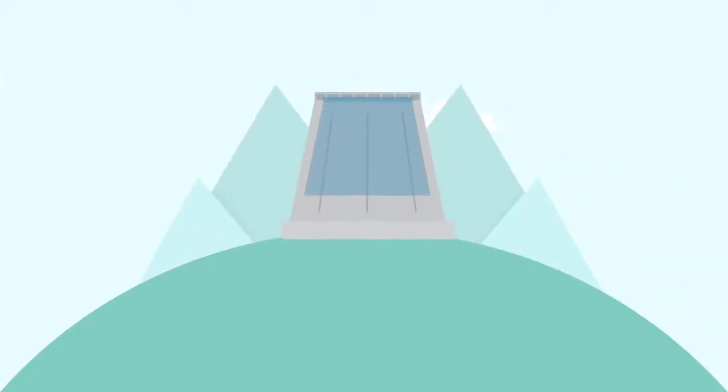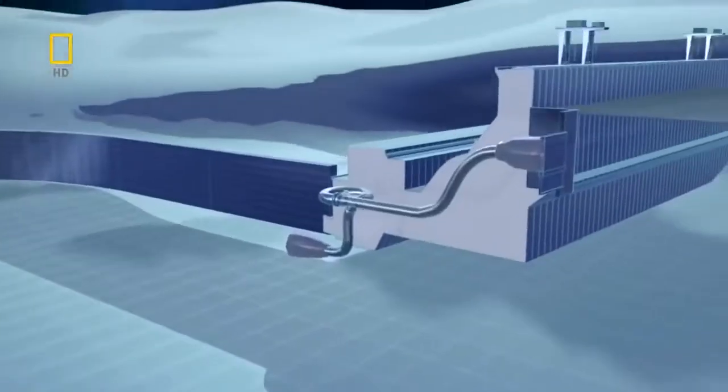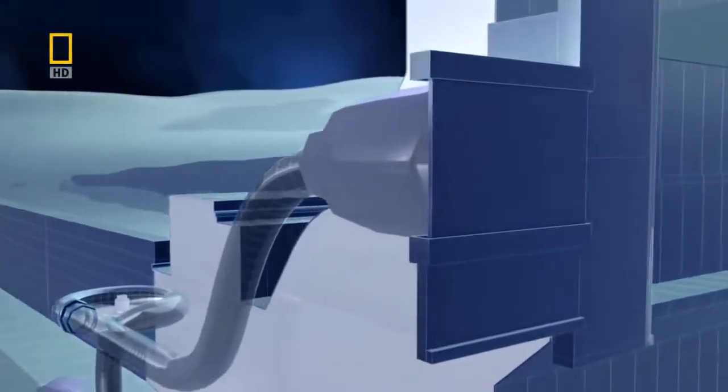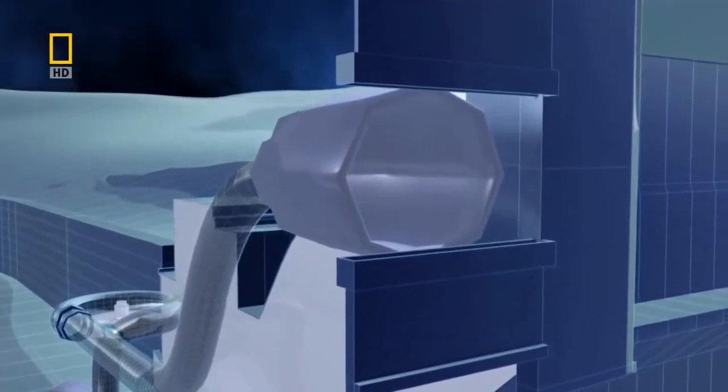Most hydropower is generated from dams built on rivers and streams. The water is channeled down gigantic concrete tubes towards the generators.